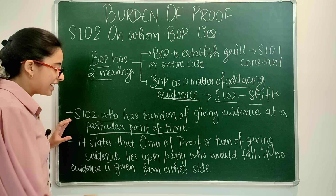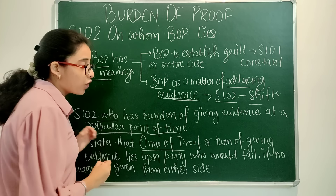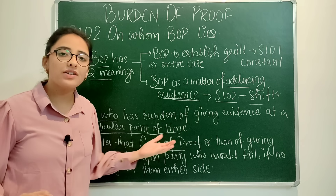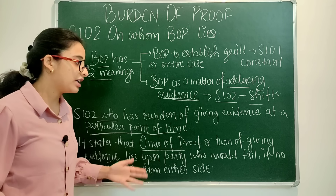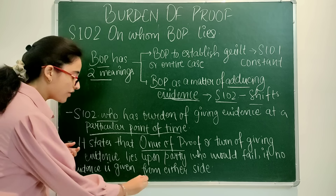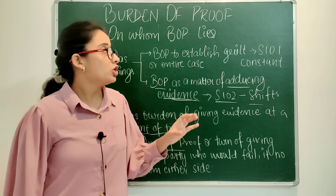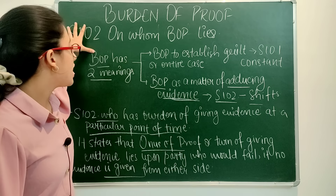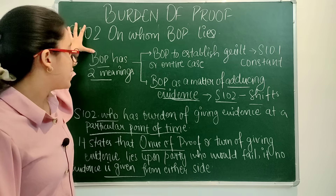Section 102 states that the onus of proof — the turn of giving evidence — lies upon the party who would fail if no evidence is given from either side. So the answer here is about onus of proof — whose turn it is to give evidence — it is that party's turn who would fail if no evidence is given from either side.